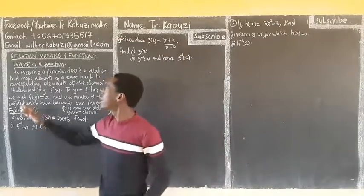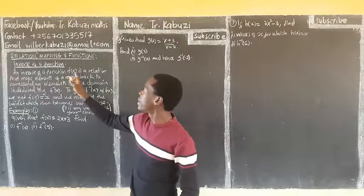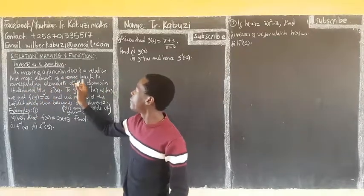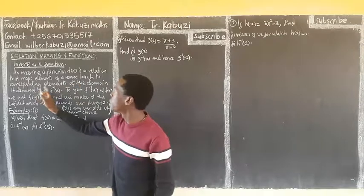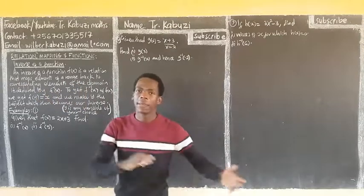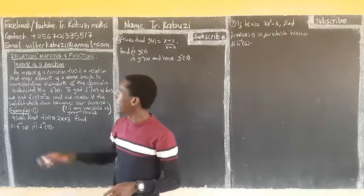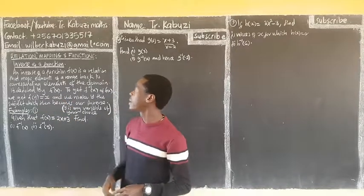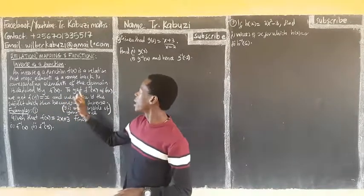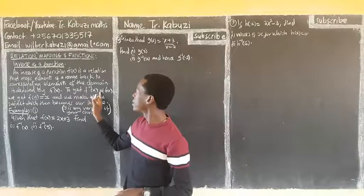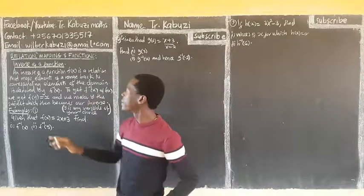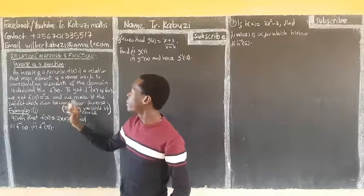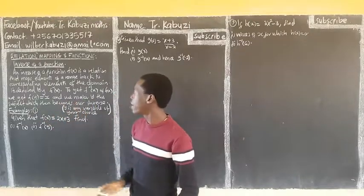Let us define it. An inverse of the function f of x is a relation that maps elements of a range back to corresponding elements of the domain — it's bringing them back. It's known by f inverse of x. To get f inverse of x, we get f of y equal to x and we make y the subject, which then becomes our inverse.